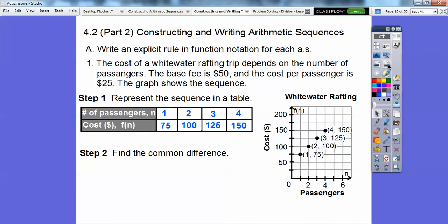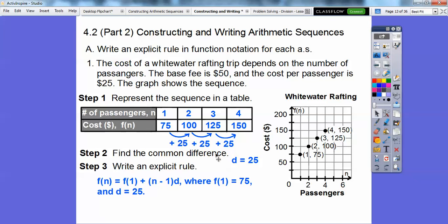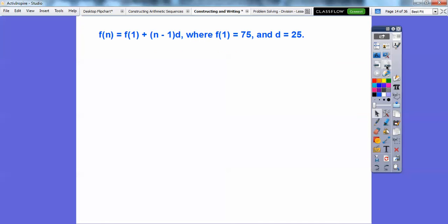Let's find the common difference. The common difference is how much do they increase? Well, they're increasing by 25, so d equals 25. Write an explicit rule. There's our formula for the explicit rule. Remember this from the last lesson? Our first term plus n minus 1 times d. Our first term is 75 and d is 25, so let's substitute in 75 and 25.